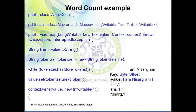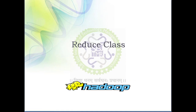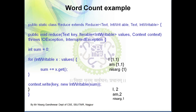Now the main function. In order to make use of the Mapper and Reducer classes, we need a main function — public static void main(String[] args). First, we create a Configuration object 'conf', which is used to set the configuration of the MapReduce program for the word count purpose. Then we create a Job object, because in Hadoop we need to prepare and submit a job to the Hadoop cluster. The main class for that job is WordCount.